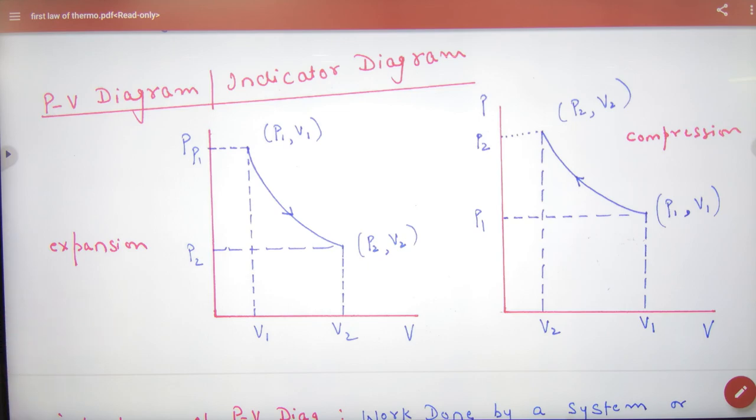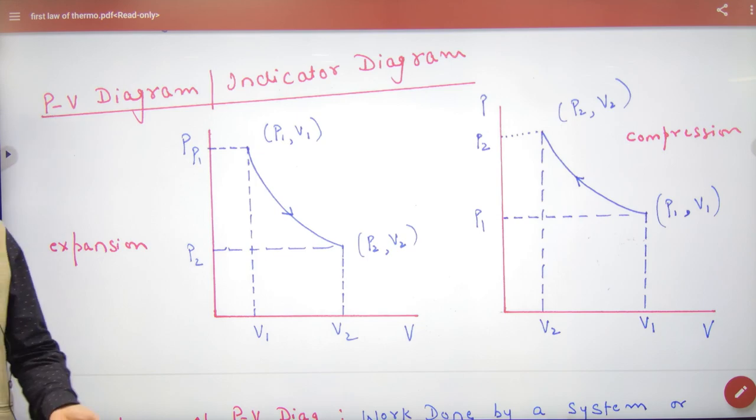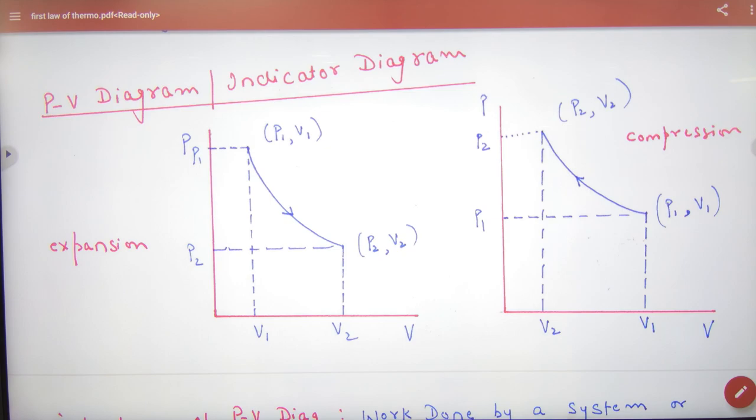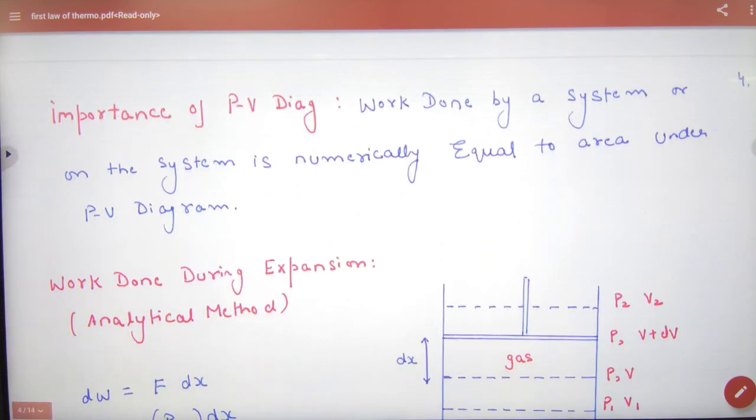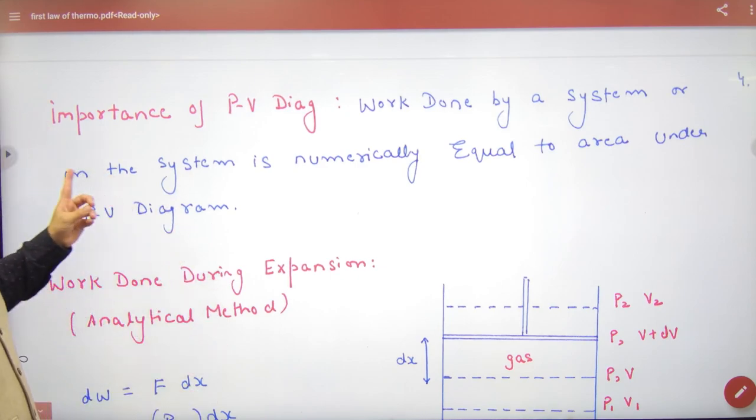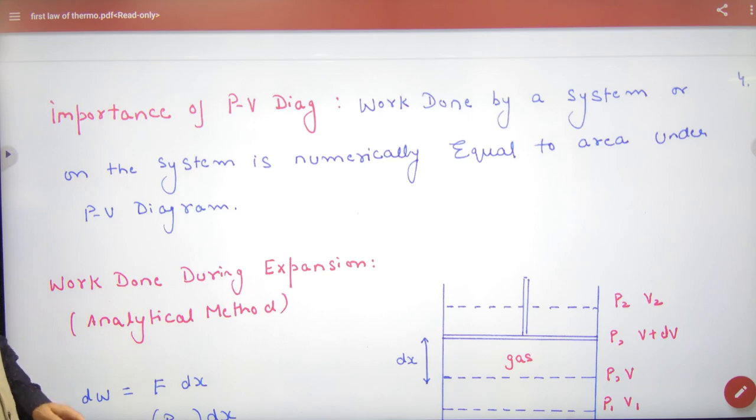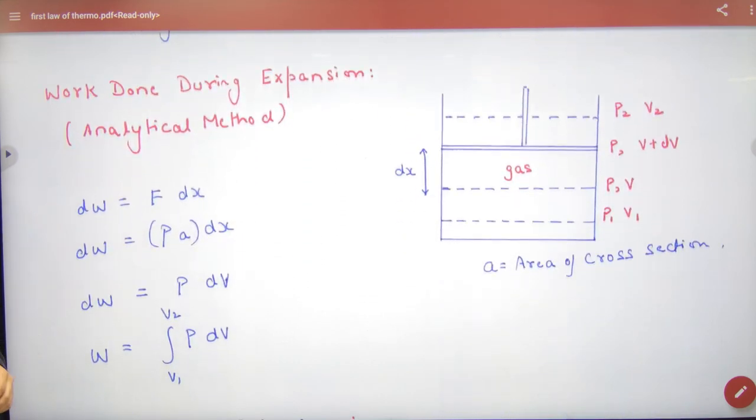dv positive expansion work done positive, dv negative then work done negative, okay let's go. Importance of pv diagram: work done by the system and on the system is numerically equal to area under the pv curve. Tell me work done during expansion, so if work done expansion.